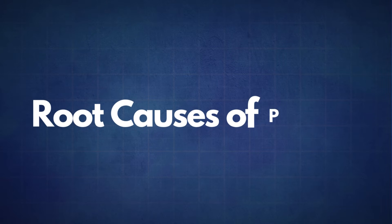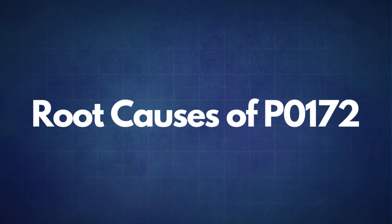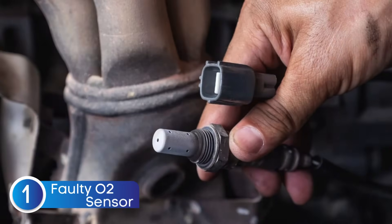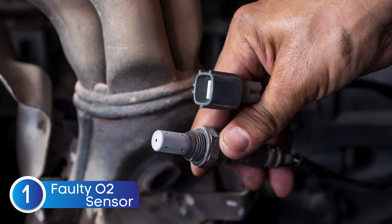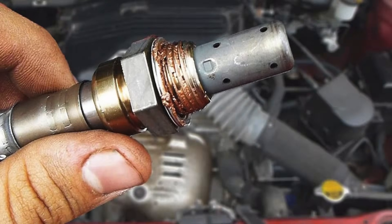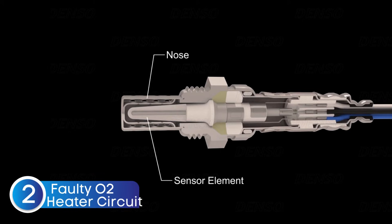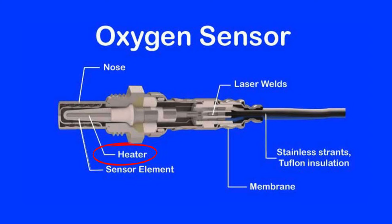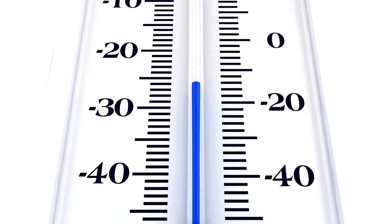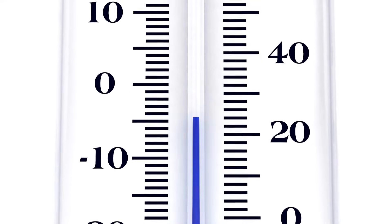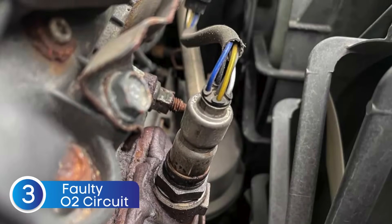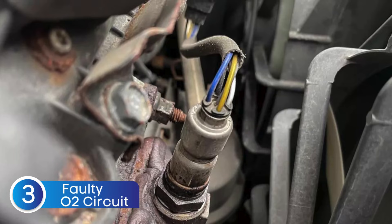Let's discuss some common root causes of the P0172 error code. The first cause is a faulty oxygen sensor — sometimes the oxygen sensor itself may fail due to wear or contamination. The second cause is a faulty oxygen sensor heater circuit. Oxygen sensors need to reach a specific temperature to work effectively, which is why many have an integrated heater. A faulty heater circuit can prevent the sensor from reaching optimal operating temperature, resulting in incorrect readings.